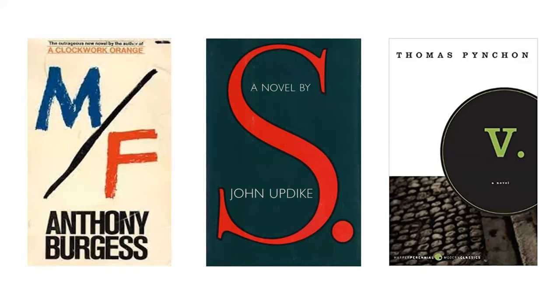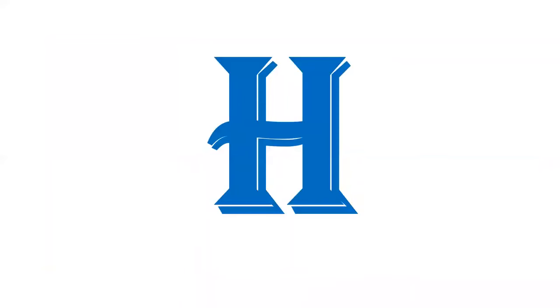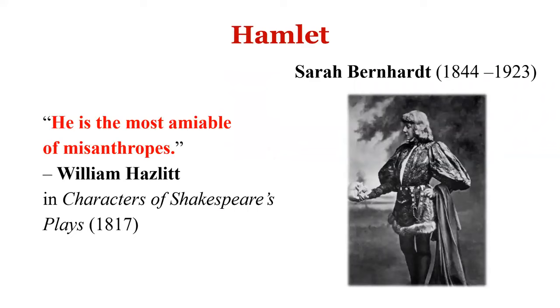H is for Hamlet. 'To be or not to be, that is the question' — the dilemma of this Prince of Denmark. William Hazlitt, in his famous work Characters of Shakespeare's Plays, says Hamlet is 'the most amiable of misanthropes' — a misanthrope is one who hates humankind. We are captivated by Hamlet because we can never be sure whether he is truly mad or merely pretending to be mad.